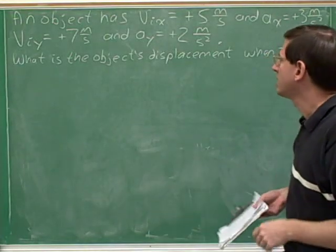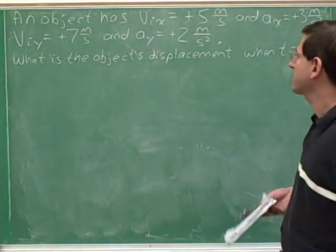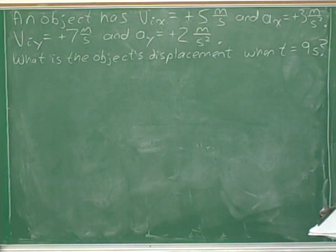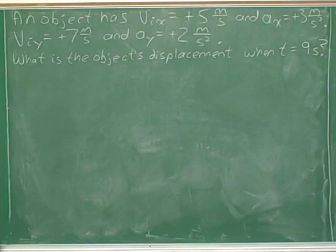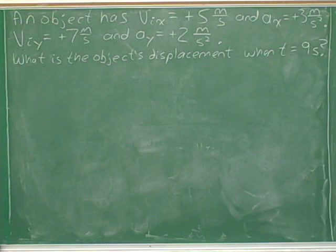Let's try a problem. An object has v-initial x = +5 m/s and a_x = +3 m/s². V-initial y = +7 m/s and a_y = +2 m/s². What is the object's displacement when t = 9 seconds?